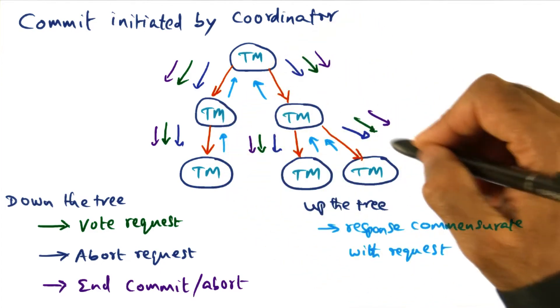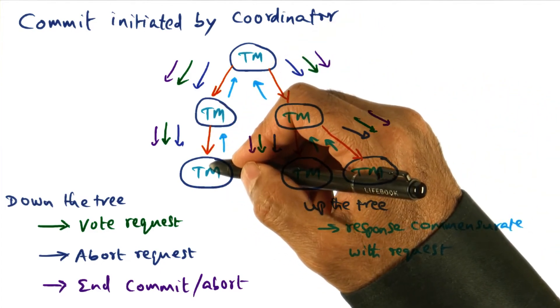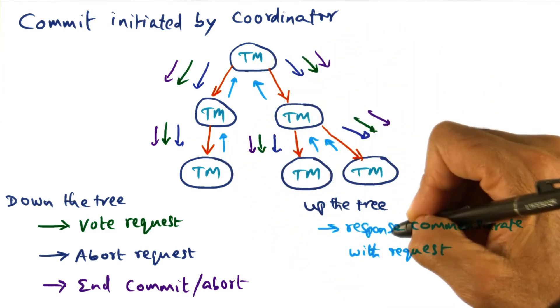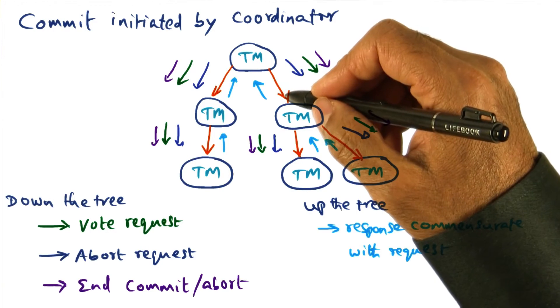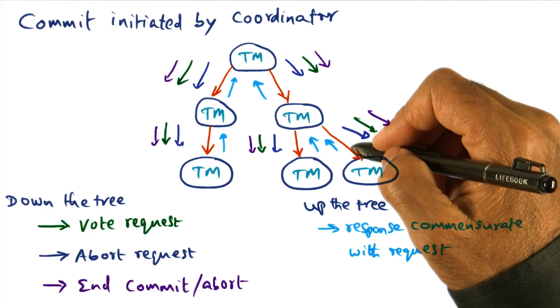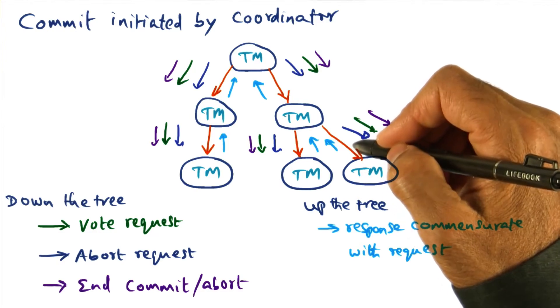And when they get that request, these transaction managers can do local cleanup, whatever that might mean, and indicate to the transaction manager by response that, yes, we've done what needs to be done to clean up the interaction that was started by that failed IPC chain.